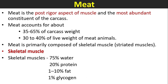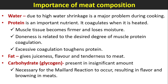Meat is the most abundant constituent of the carcass. Meat accounts for about 35 to 65 percent of carcass weight and 30 to 40 percent of the live weight of meat animals. Meat is primarily composed of skeletal muscles, also known as striated muscles. Skeletal muscles contain 75 percent water. The components of skeletal muscles are: 75 percent water, 20 percent protein, 1 to 10 percent fat, and 1 percent glycogen.